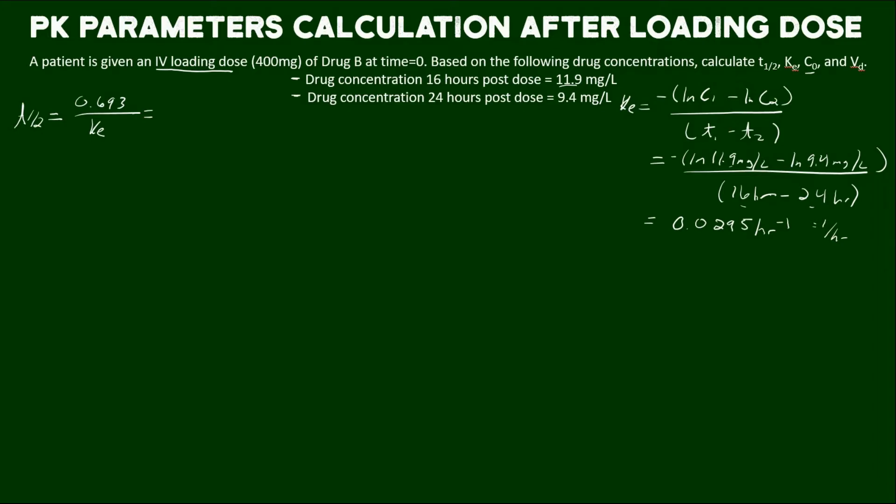And what we get is a half-life of about 23 and a half hours. Where did the units come from? If we put the units on our KE, that makes the hours go into the numerator. So that's how we get 23.5 hours.